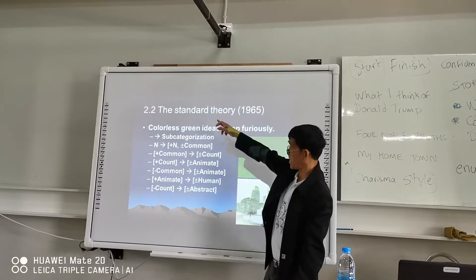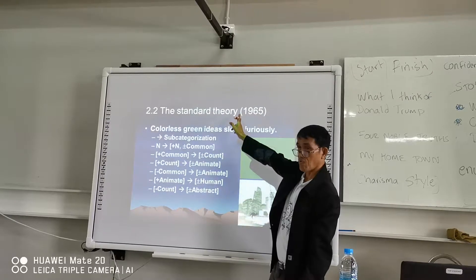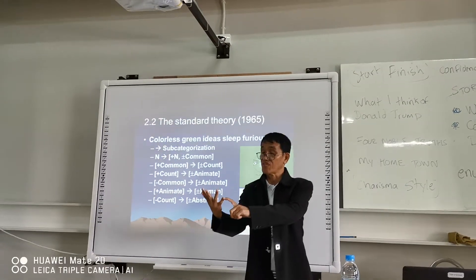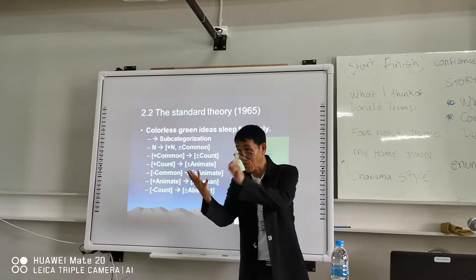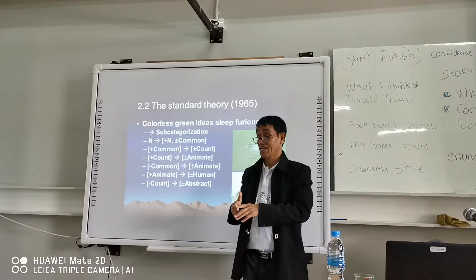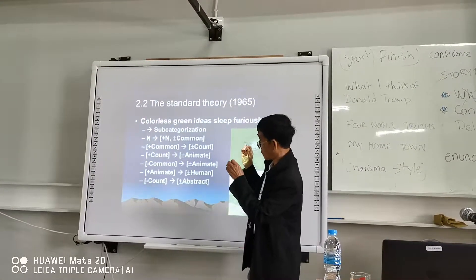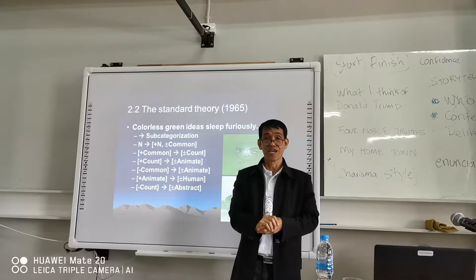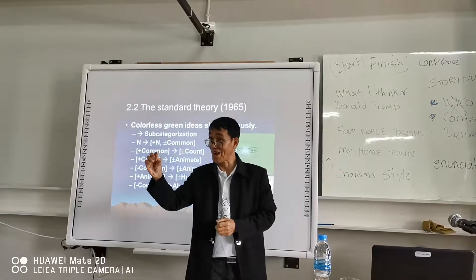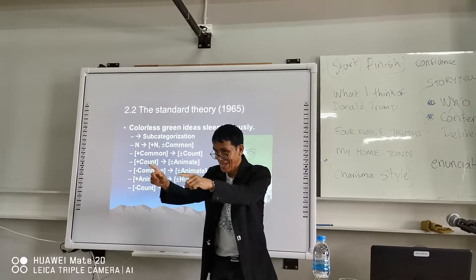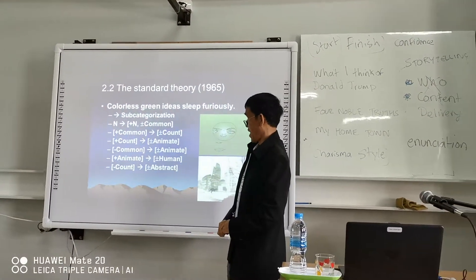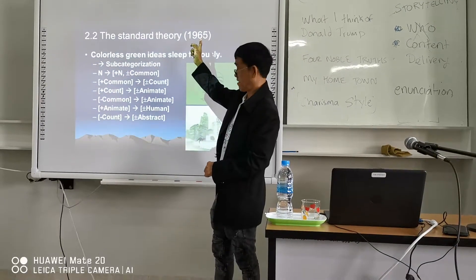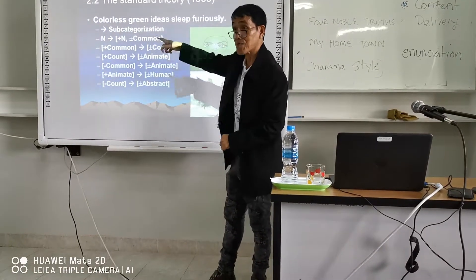When you study the standard theory, you would analyze the sentence in this way. When you use phrase structure grammar — phrase structure rules — you follow that on the surface structure. Then, when you use what we call transformational rules, you have to have three diagrams — S, P, V, P — problem, you know. And when you use the standard theory set forth by Noam Chomsky, you will have to follow this pattern of your analysis.